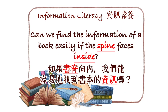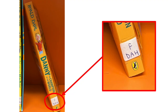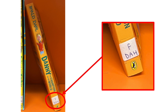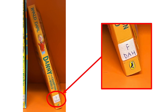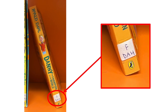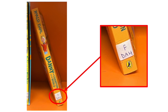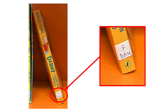Can we find the information of a book easily if the spine faces inside? Challenging question. Can you see on the book spine there is a label — F.D.A.H. Do you know what this label is? Don't forget to leave your comments and ideas below. See you next time, bye bye.